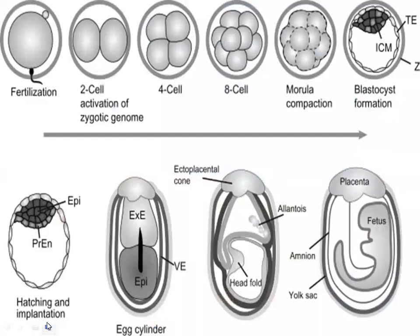There is embryogenesis — the formation of the embryo. After fertilization there will be two blastomeres, then four, then eight, then the 16-cell stage. This 16-cell stage is called the morula. It is called morula because it looks like the mulberry fruit.